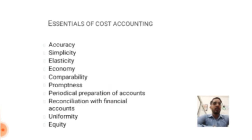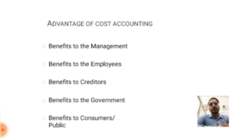The essentials of cost accounting include: accuracy, simplicity, elasticity, economy, comparability, prompt preparation of accounts, and coordination with finance accounts. We also cover informality and equity, and the advantages of cost accounting — benefits to management, benefits to employees, and benefits to creditors.